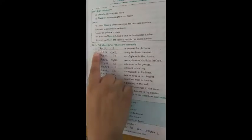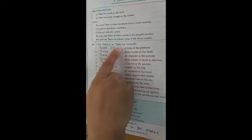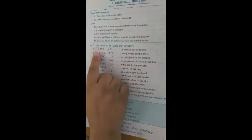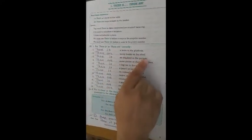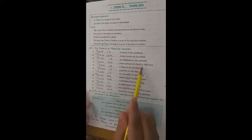Number 1: Put there is or there are correctly. There is a train at the platform. There are many books on the shelf. There is an elephant in the picture. There are some pieces of chalk in the box. There is a big car in the garage.